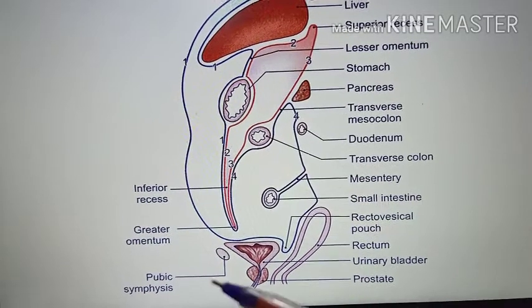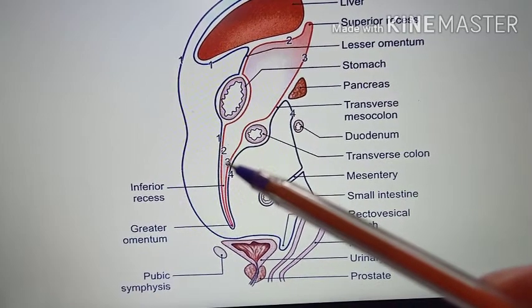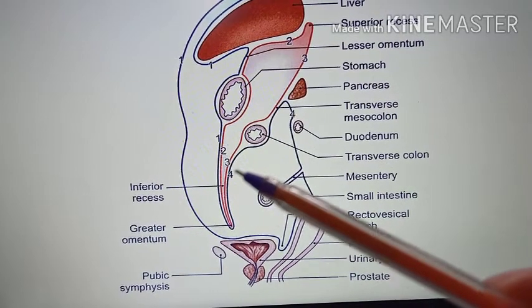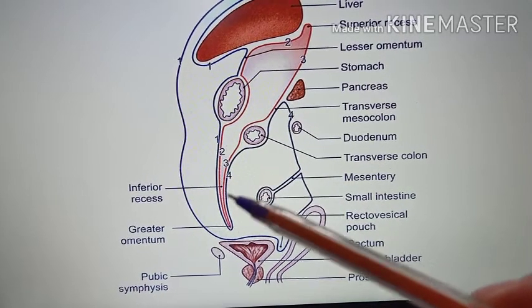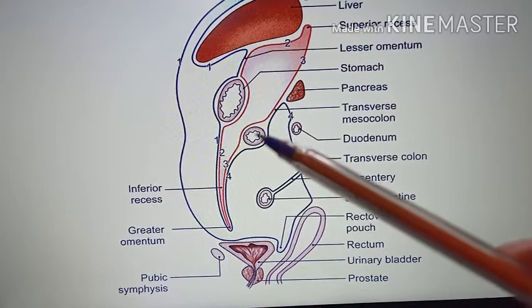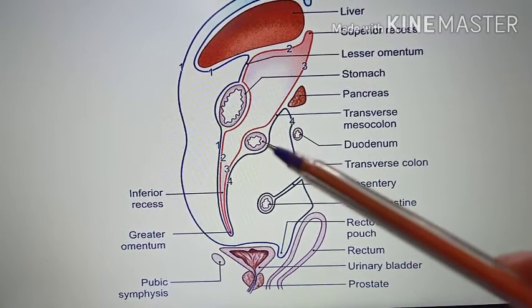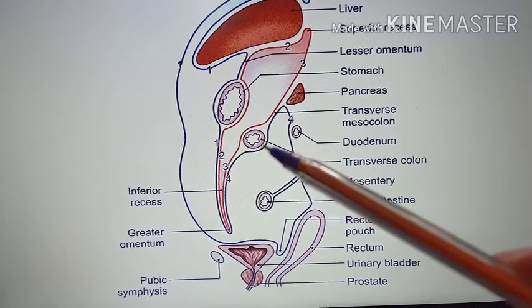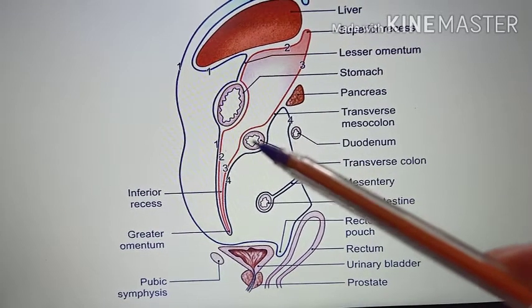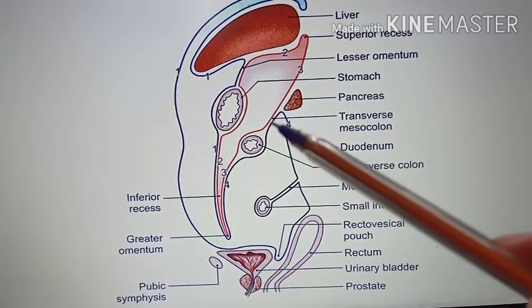The third layer and the fourth layer enclose the transverse colon and continue as the transverse mesocolon.